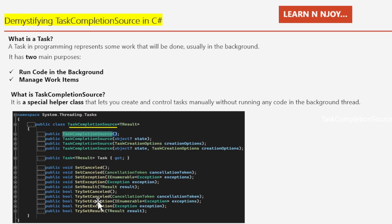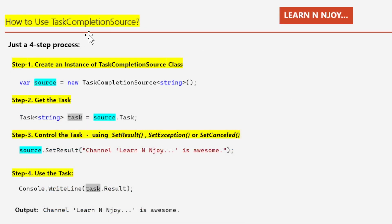How to use TaskCompletionSource — it's a four-step process. Step one: create an instance of the TaskCompletionSource class. We write something like: source = new TaskCompletionSource<string>(). This line creates a new instance of the TaskCompletionSource class with a generic type parameter of string.